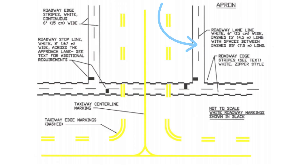Notice the vehicle lane markings. Vehicle lane markings will typically have white solid lines on the edge of the usable roadway and dashed white lines in the center.